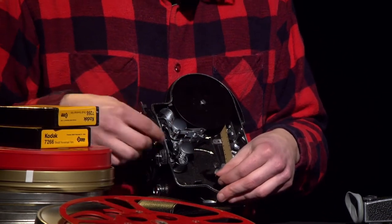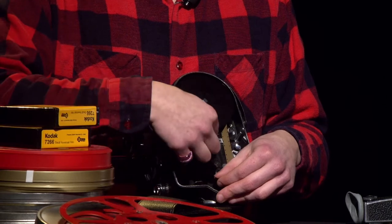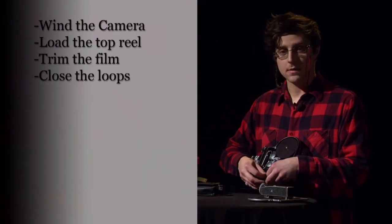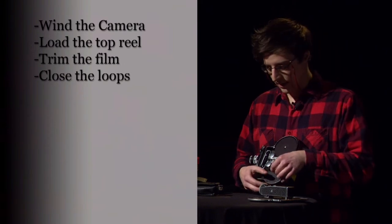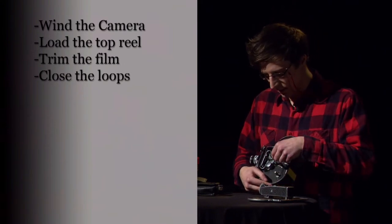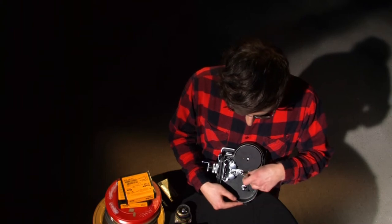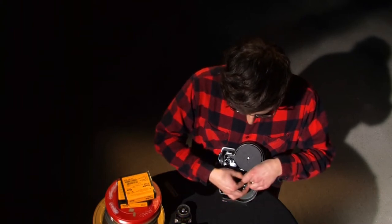Next, you are going to need to make sure that these loops are closed, again to ensure that it threads smoothly. Now, you are going to need to take the film and insert it in this slot right here, right below the top reel.